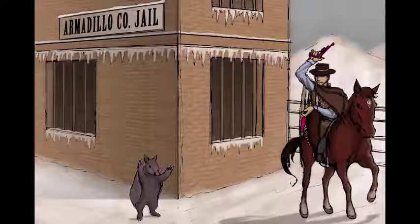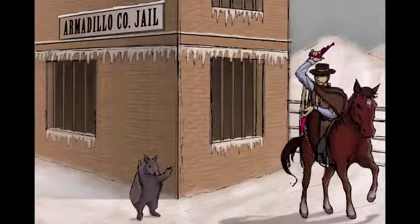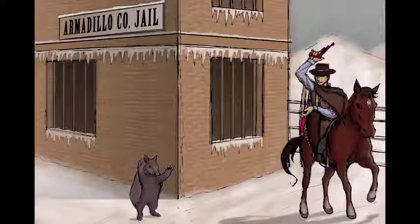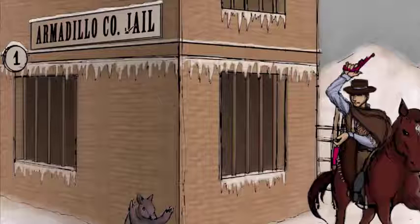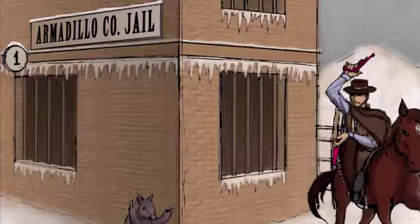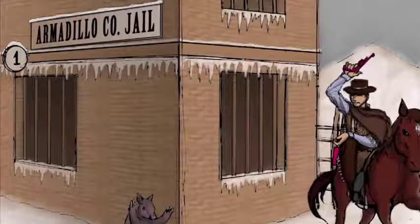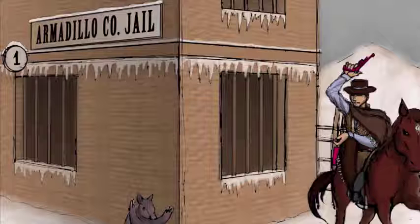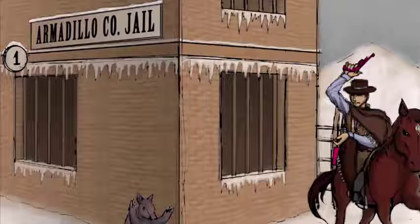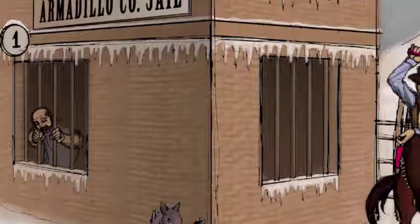Now let's move on to clinical presentations. It's somewhat tricky because Mycobacterium leprae really has two separate presentations that are distinctly different in terms of pathogenesis and clinical presentation. These two forms are called tuberculoid and lepromatous leprosy. We've divided the jail into two separate jail cells. Starting on the left with jail cell one, we'll discuss the tuberculoid presentation. The number represents the type of helper T cell involved — jail cell one is for Th1 cells, which promote cell-mediated immunity. With a strong Th1 response, the body can contain the bacteria within macrophages, represented by a prisoner behind bars.